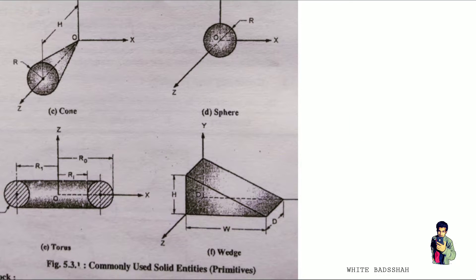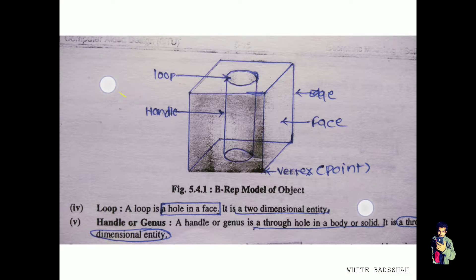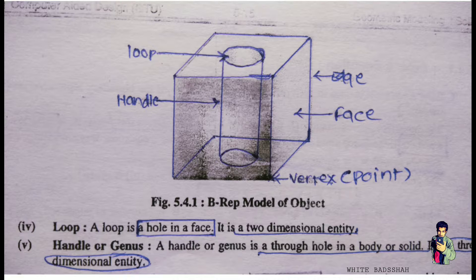Now let's look at the B-Rep model entities for making a complex model. For B-Rep, the entities include a loop, handle, edges, faces, and vertices. These primitives are used to build a complex model. So if we cannot make a model using Constructive Solid Geometry, we can use B-Rep to make a complex model.